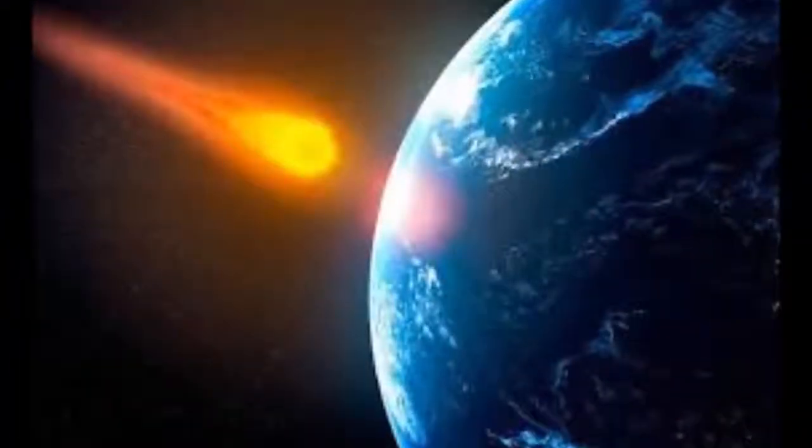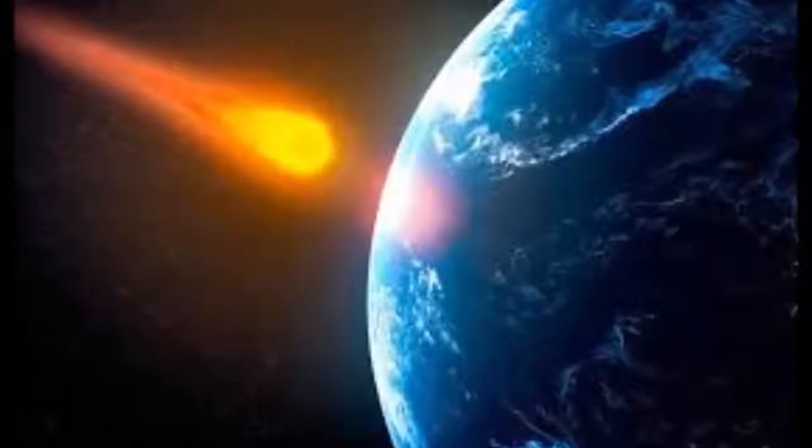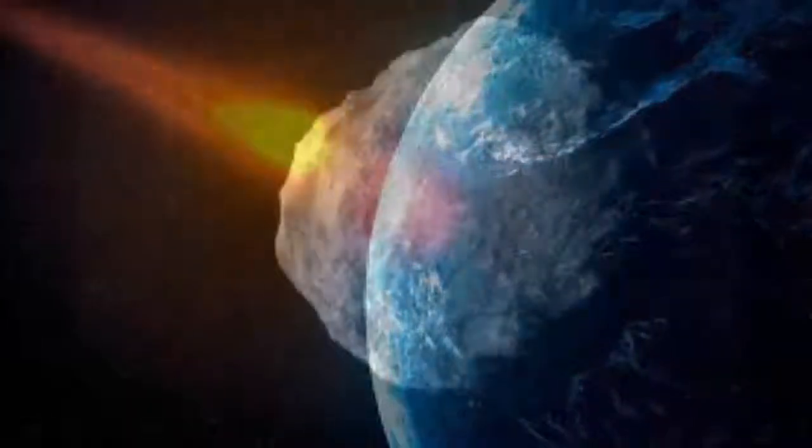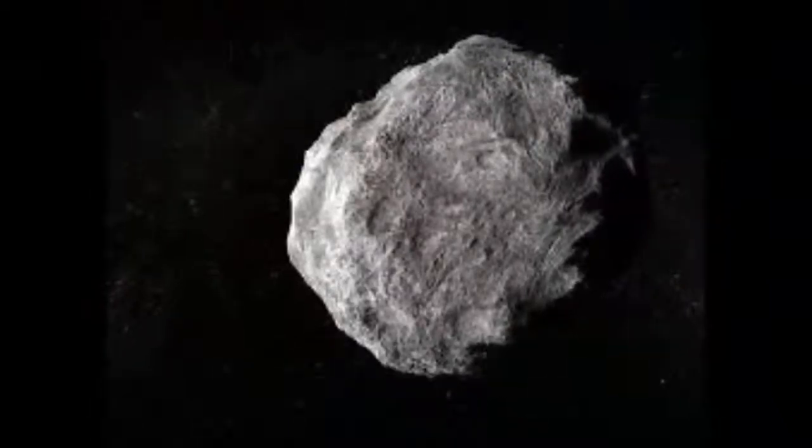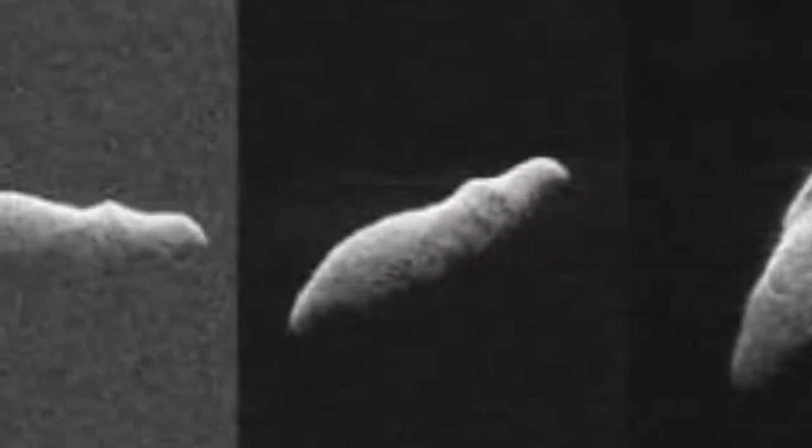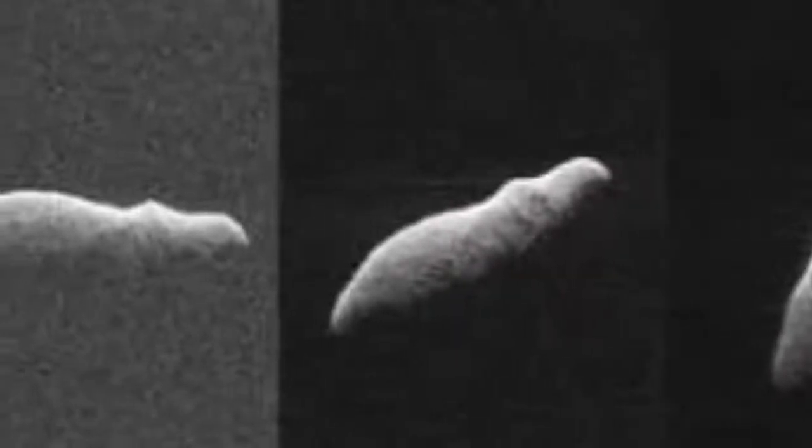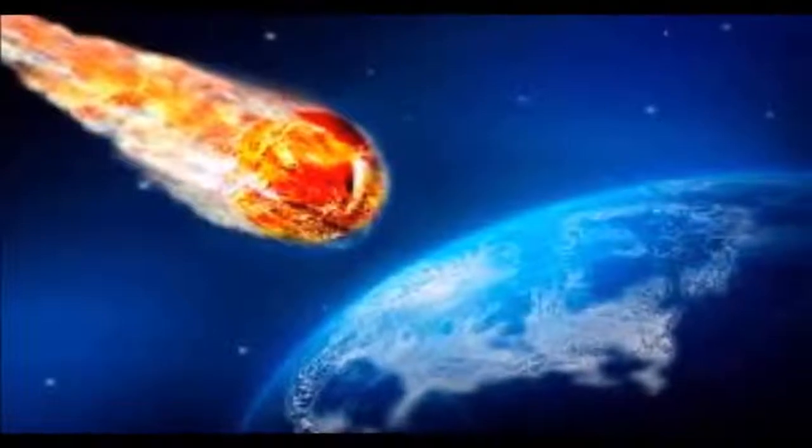NEOs, or near-Earth objects, are comets and asteroids which cut dangerously close into the Earth's orbit of the Sun. Most of these rocky objects originate in the asteroid belt between Mars and Jupiter but have been nudged deeper into the solar system.